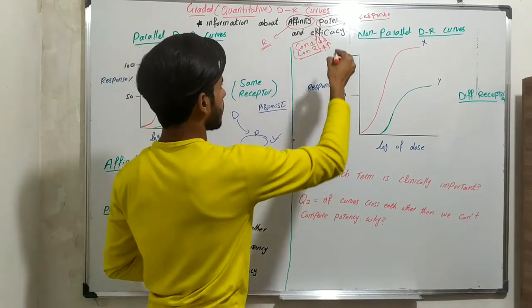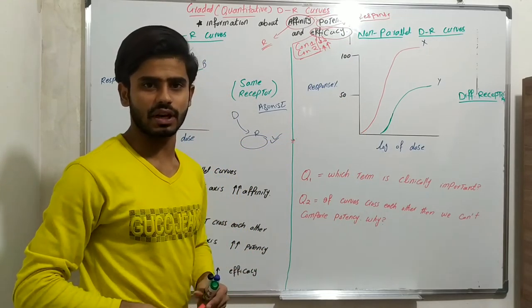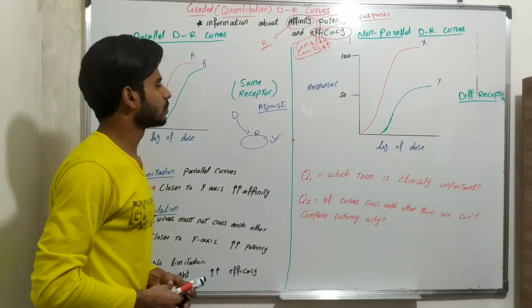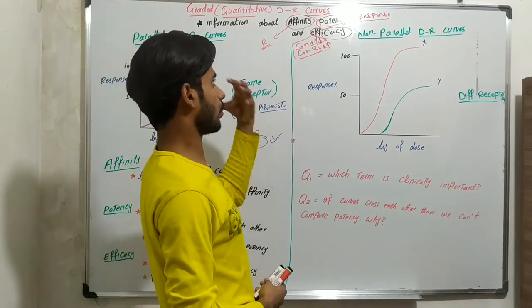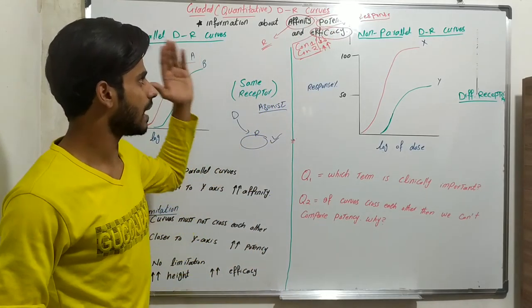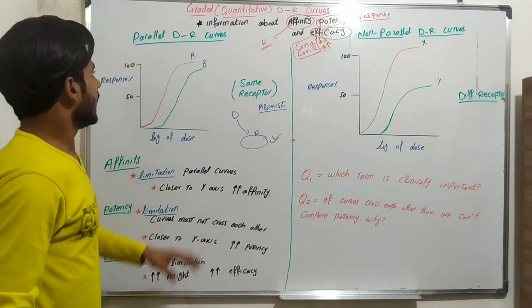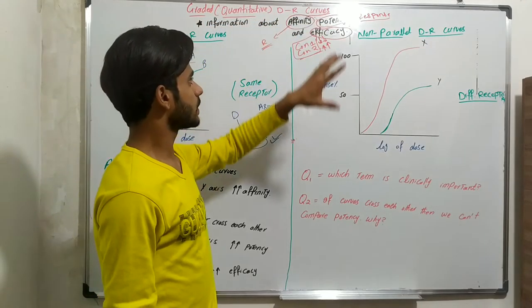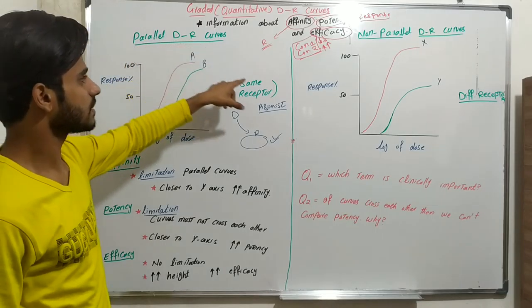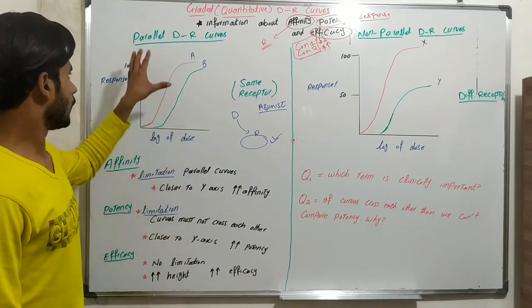Efficacy tells us about the effectiveness of the drug — how much the drug is effective. That is called efficacy. The graded quantitative dose-response curves are of different types, but in this lecture we will discuss parallel dose-response curves and non-parallel dose-response curves.